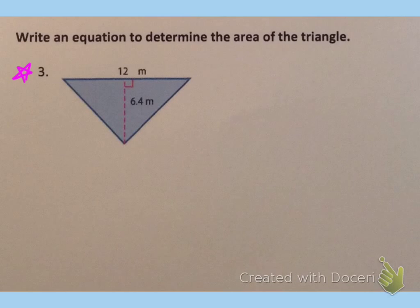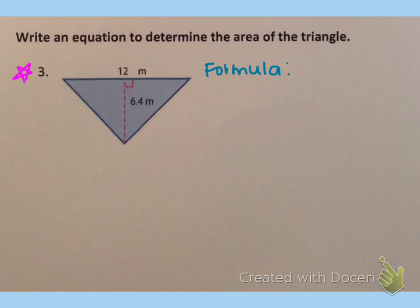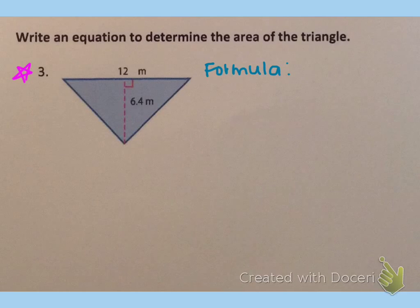Write an equation to determine the area of the triangle. On this one, I'm going to ask you to do it completely on your own. Remember that your first step is to write the formula: A equals one-half times B times H, so area is half of the base times the height. We will check this with our groups in class, so once you finish this problem, go ahead and continue the video to try the other problems.